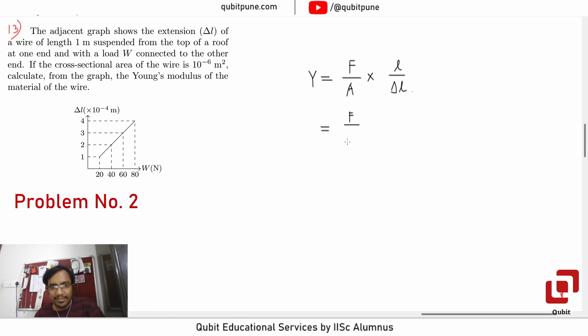Let's shift delta L here. This length is 1 meter, and the area is 10 raised to negative 6 meter squared, so everything is in SI units.